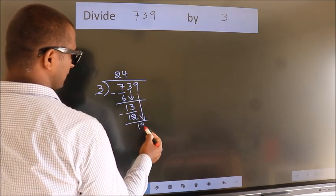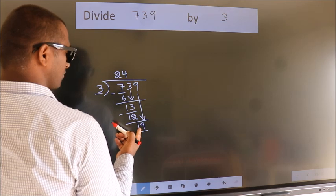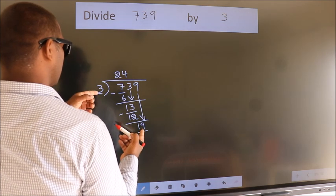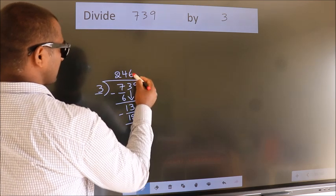So, 9 down. So, 19. A number close to 19 in 3 table is 3 times 6 equals 18.